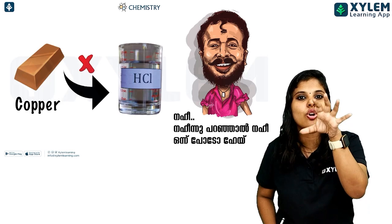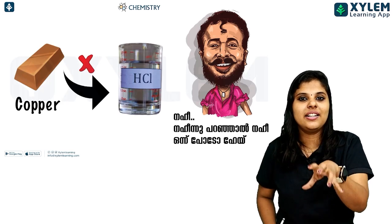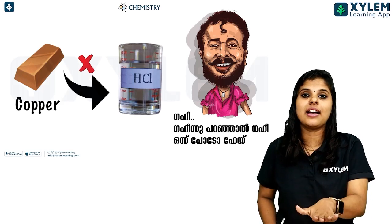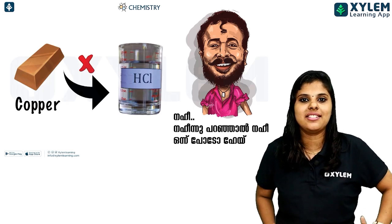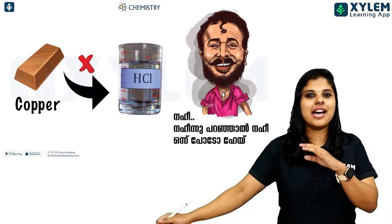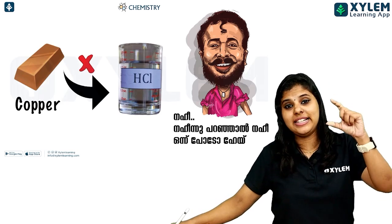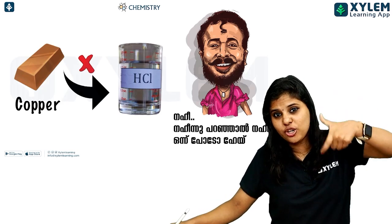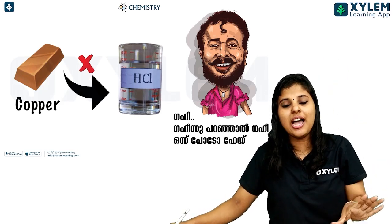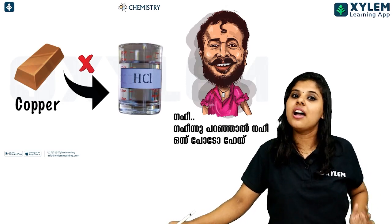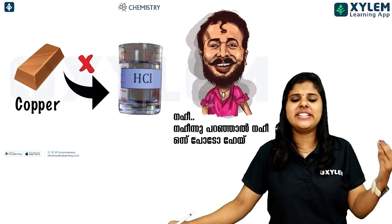Below hydrogen in the reactivity series we have copper, silver, and gold. These three metals do not react with hydrochloric acid.